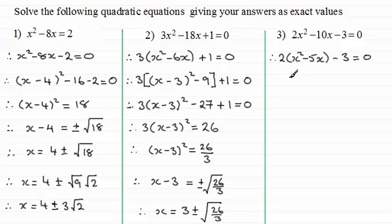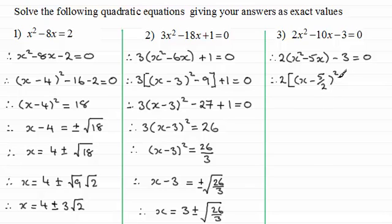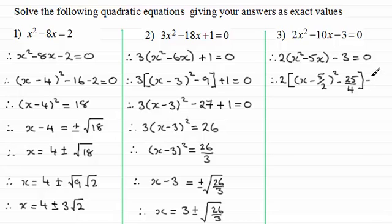We complete the square across x squared minus 5x. We write 2 times [(x minus 5/2) squared minus 25/4], because half of minus 5 is minus 5/2, and (minus 5/2) squared is 25/4 which we must subtract. Expanding out confirms: x squared minus 5x plus 25/4 minus 25/4, which gives us x squared minus 5x. We close the bracket, include the minus 3, and it equals zero.